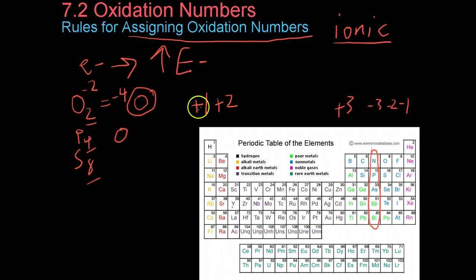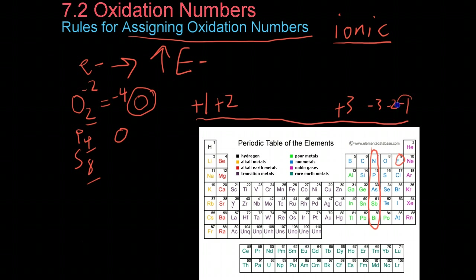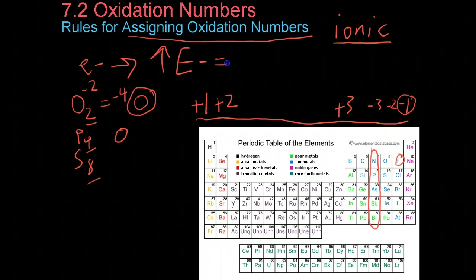There are more exceptions to the ionic oxidation number analogy. Fluorine always gets the oxidation number of -1, no matter what, because it is the most electronegative element. It has an electronegativity of 4, and all other electronegativities are scaled off that.